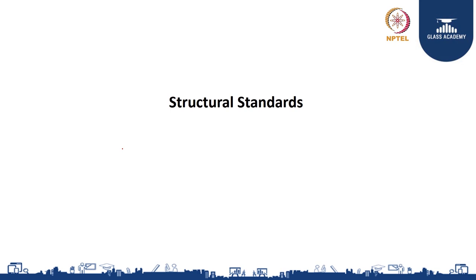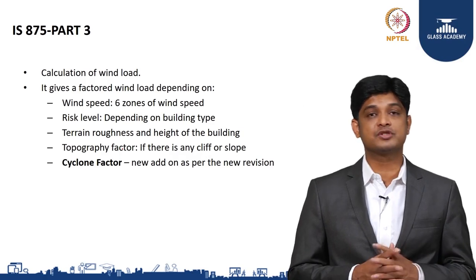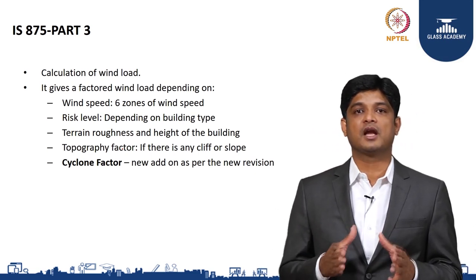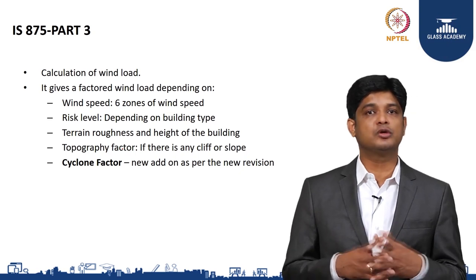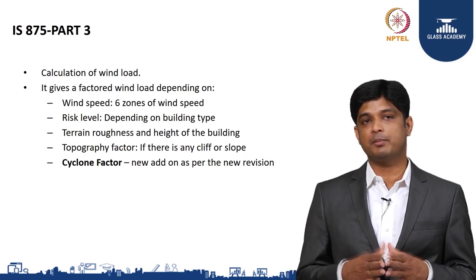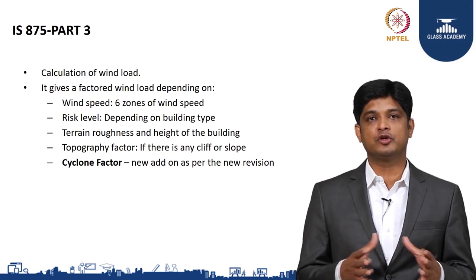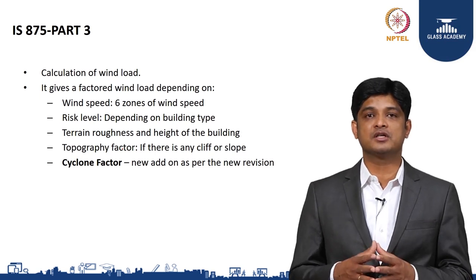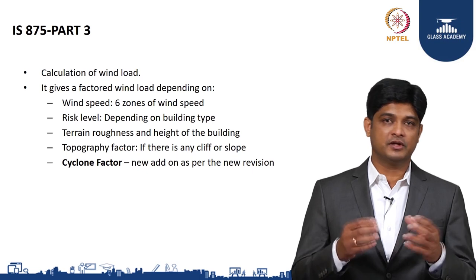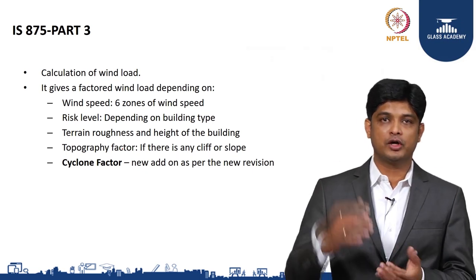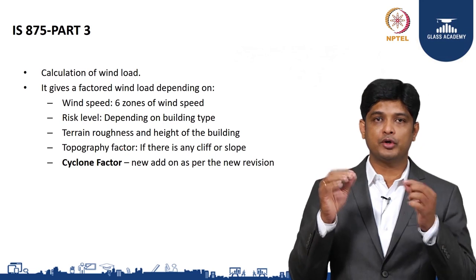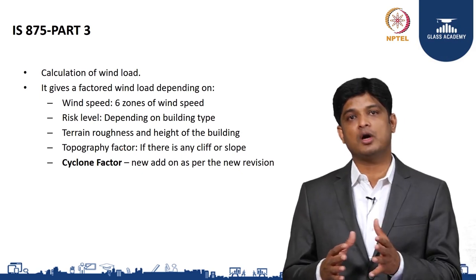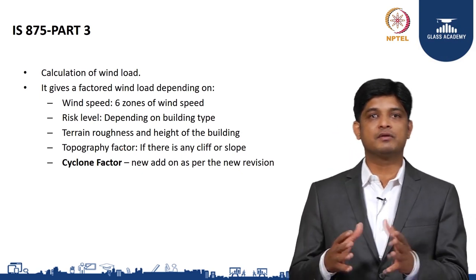Moving to the third portion — the structural standards. The structural standard is used to identify the glass thickness. To understand the glass thickness, there are two or three important parameters: first, the panel size, which is the design requirement. Then I need to understand the kind of support — whether it is four-sided, top-and-bottom, or point supports. Then I need to know what kind of load will be applied — wind load or dead load.